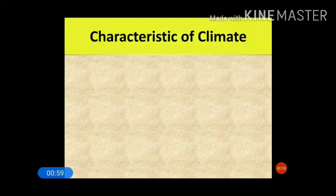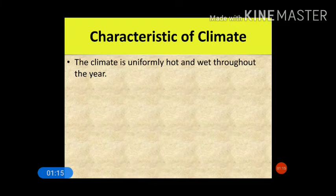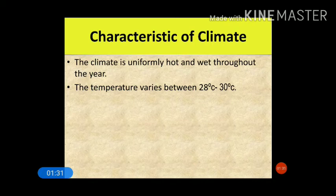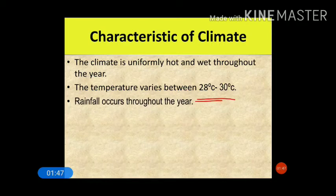Now we'll discuss the characteristics of equatorial type of climate. First, the climate is uniformly hot and wet throughout the year. As this region experiences maximum insolation, the heat of the Sun falls directly over this region. Therefore, this region experiences uniform heat and remains hot as well as wet throughout the year, receiving maximum rainfall.